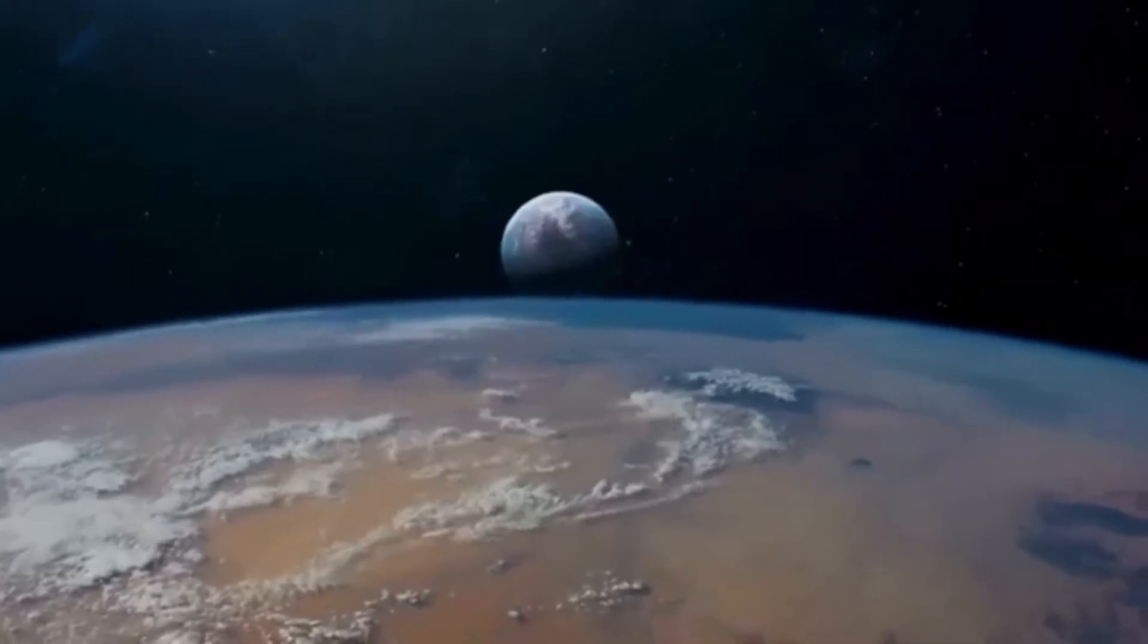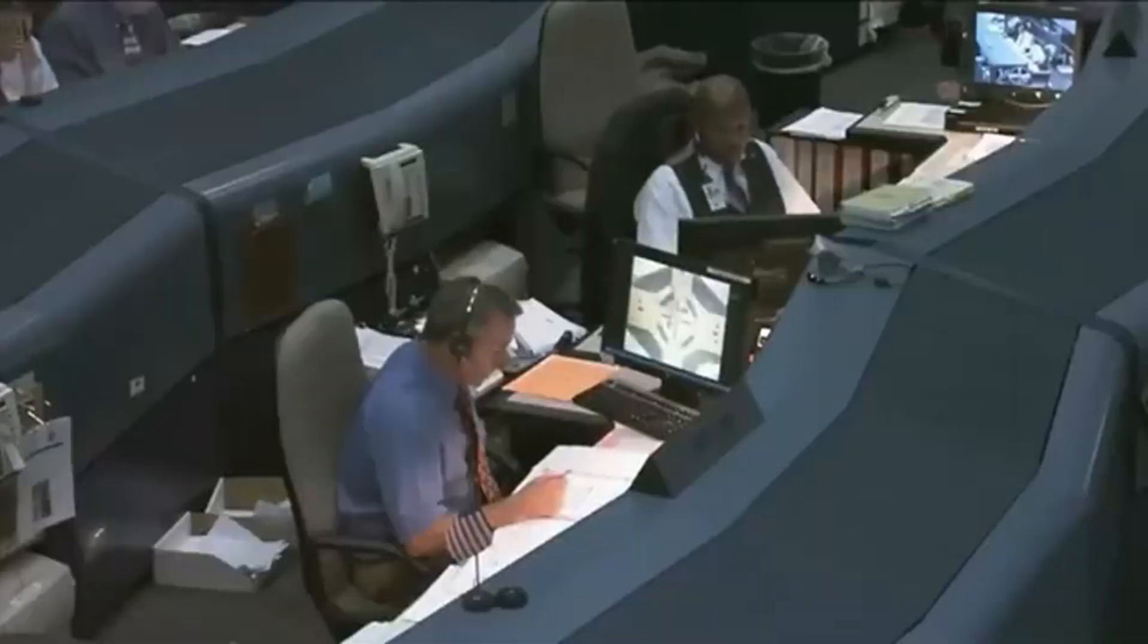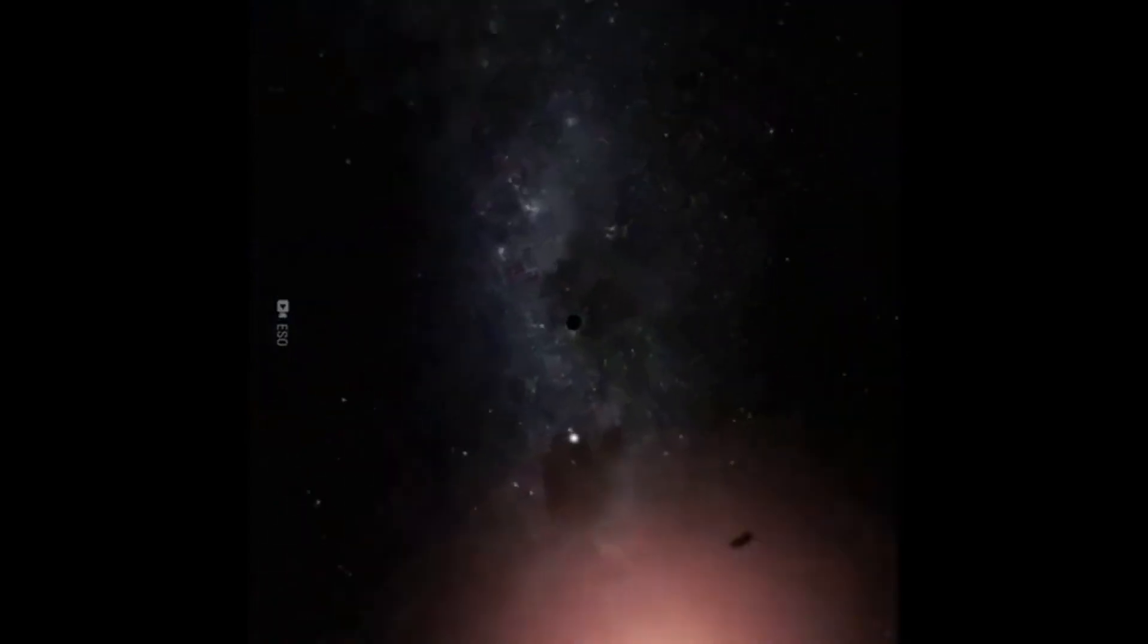With a mass 30% larger than Earth, Proxima b boasts impressive dimensions, yet its year lasts a mere 112 Earth days due to its orbit around Proxima Centauri, a diminutive red dwarf star.